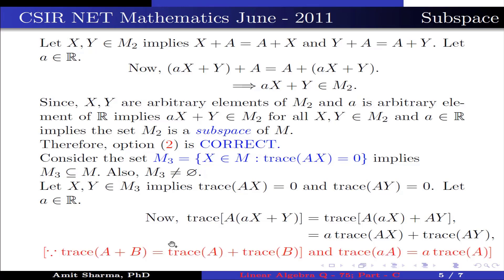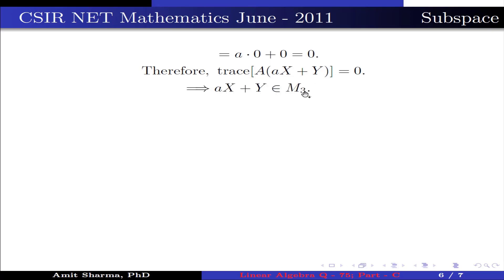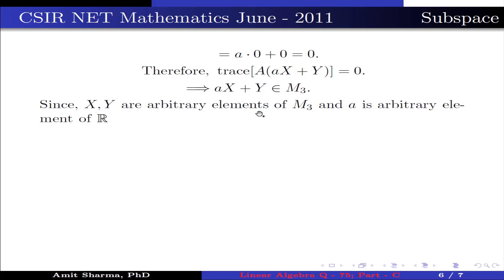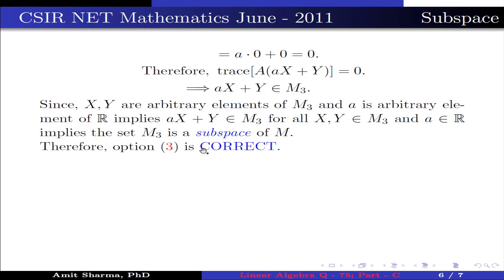Why is this so? Because we know that trace(A + B) = trace(A) + trace(B), and trace(αA) = α·trace(A) where α is a scalar. This equals α·0 + 0, since trace(Ax) = 0 and trace(Ay) = 0. This is equal to 0. Therefore trace(A(αx + y)) = 0. This implies αx + y belongs to M3. Since x, y are arbitrary elements of M3 and α is arbitrary in R, this implies αx + y belongs to M3 for all x, y in M3 and α in R. This implies the set M3 is a subspace of M. Therefore, option 3 is correct.